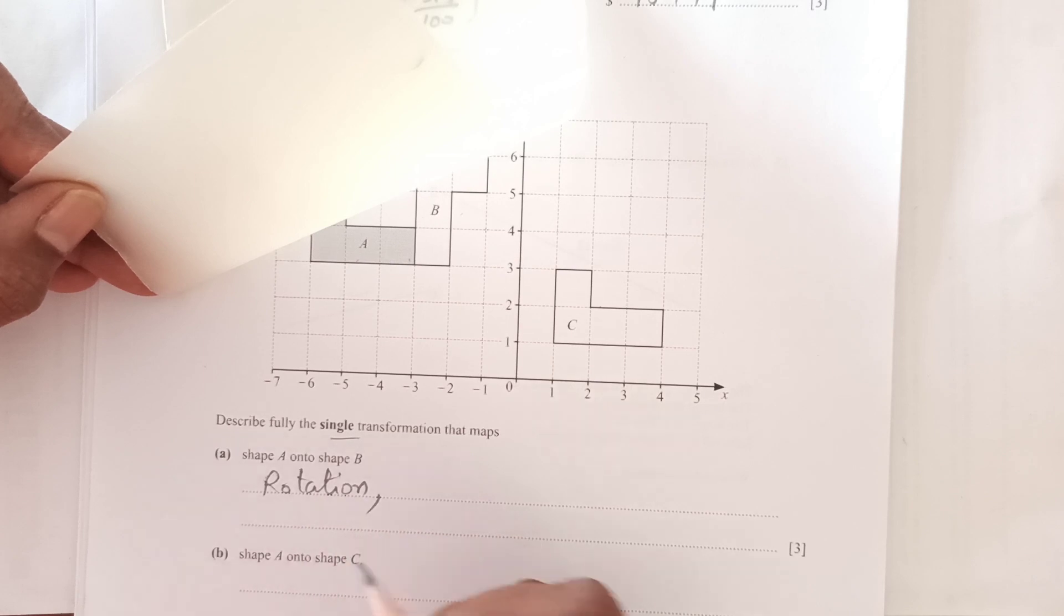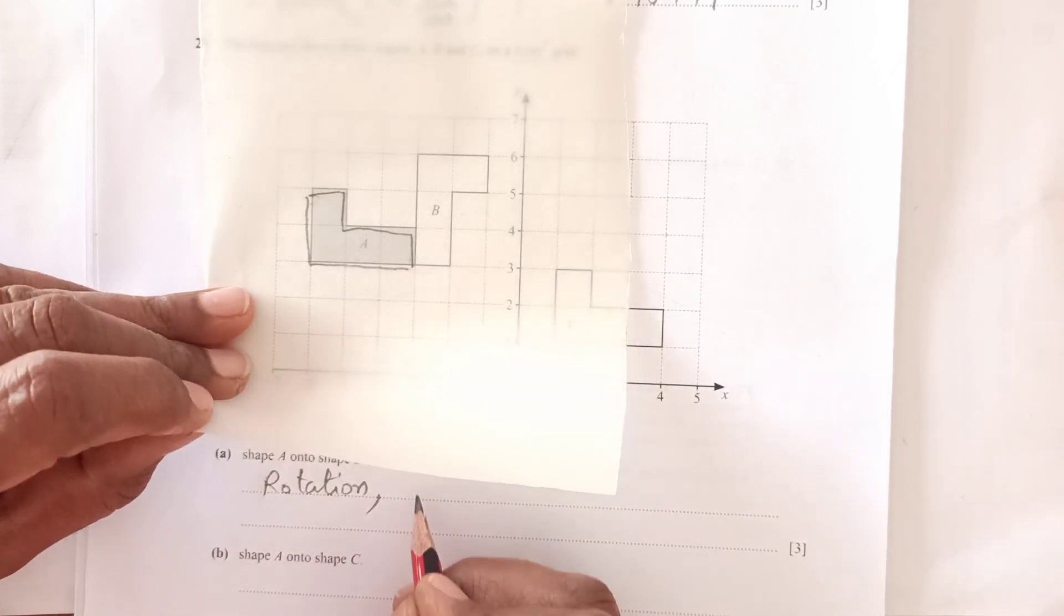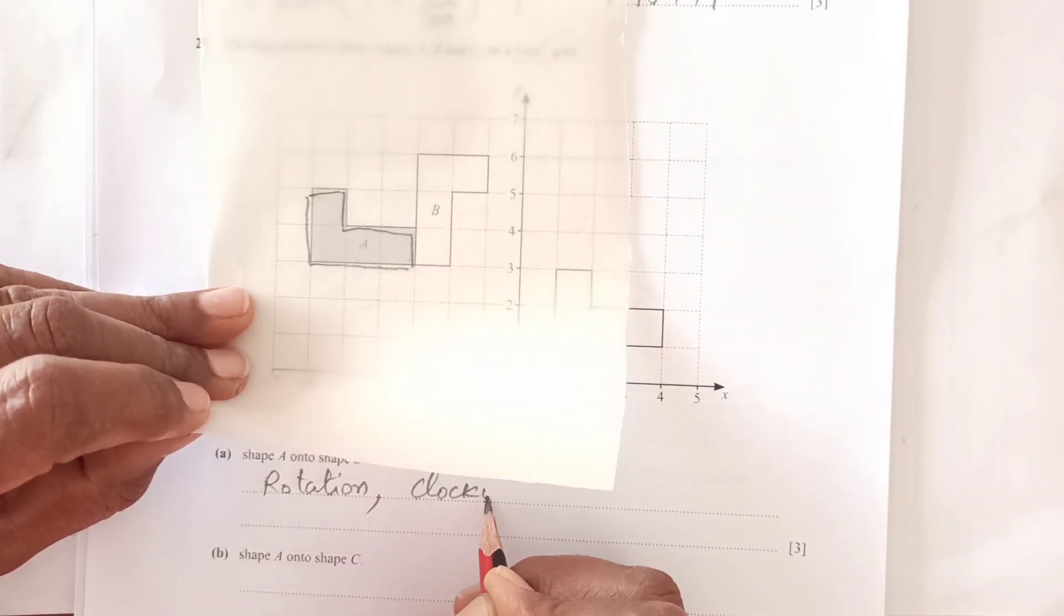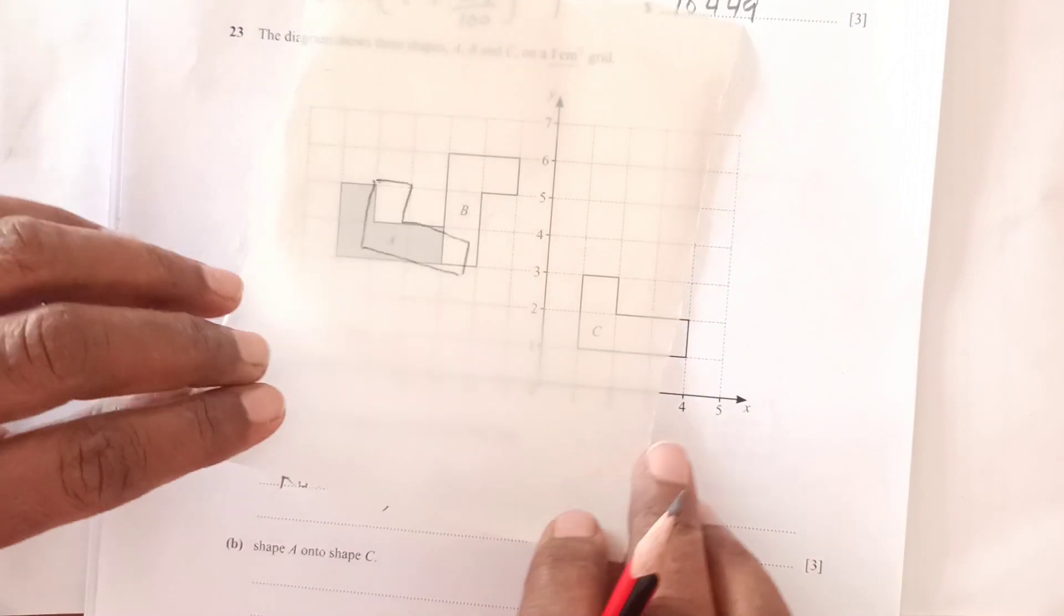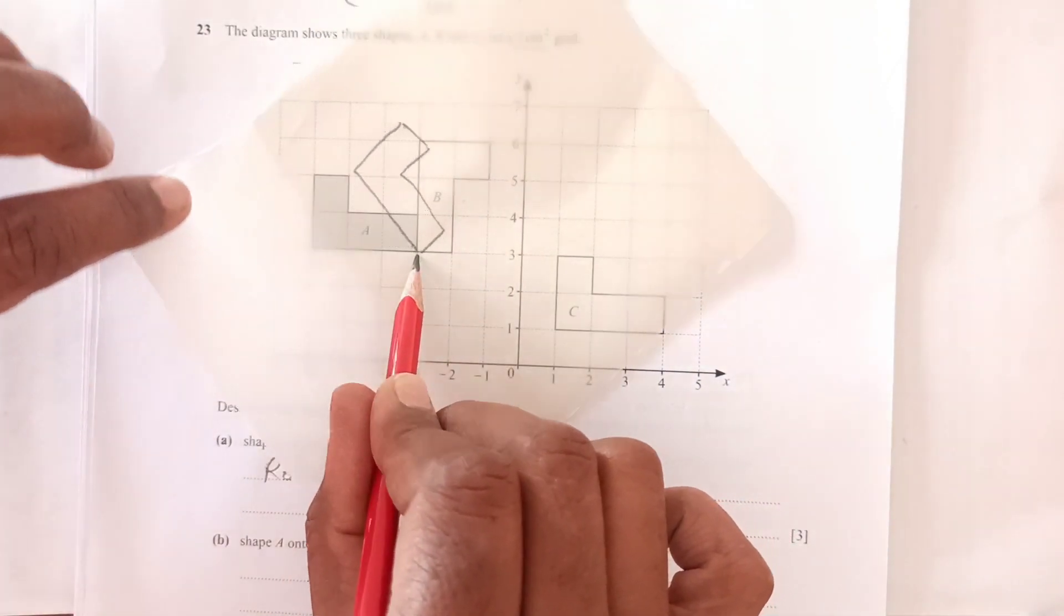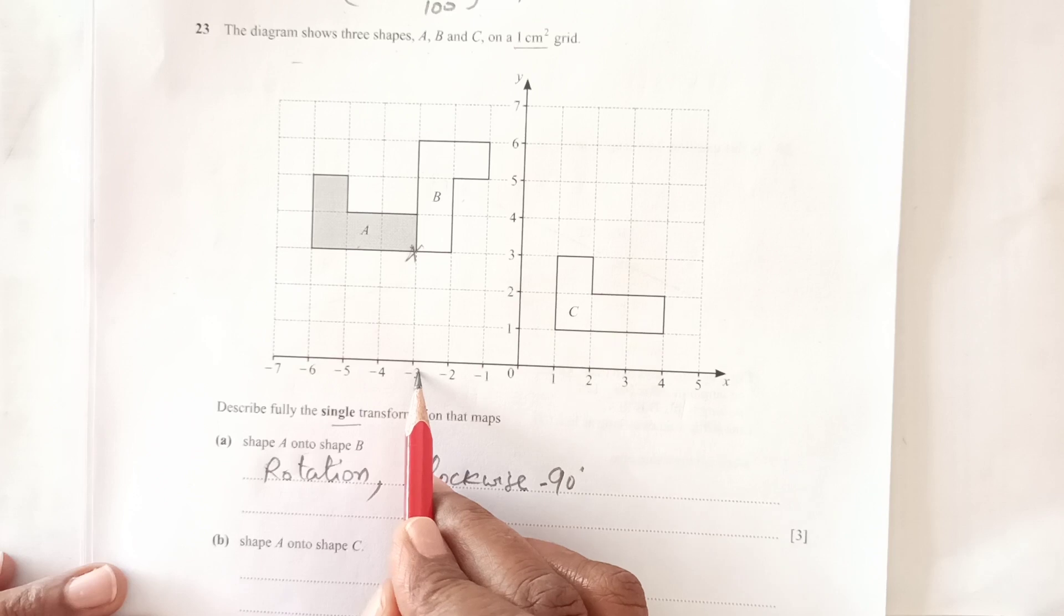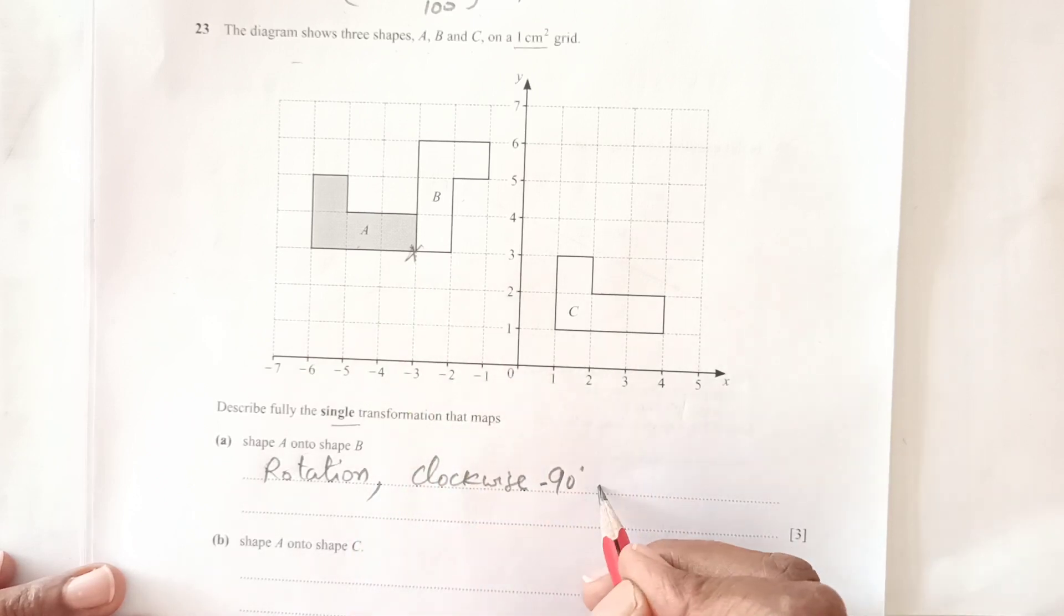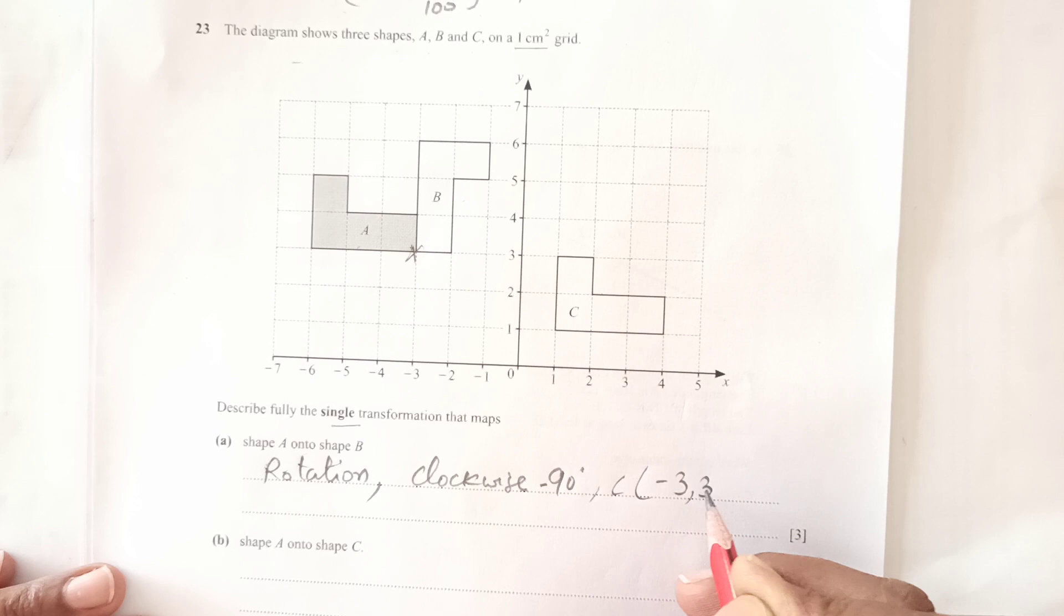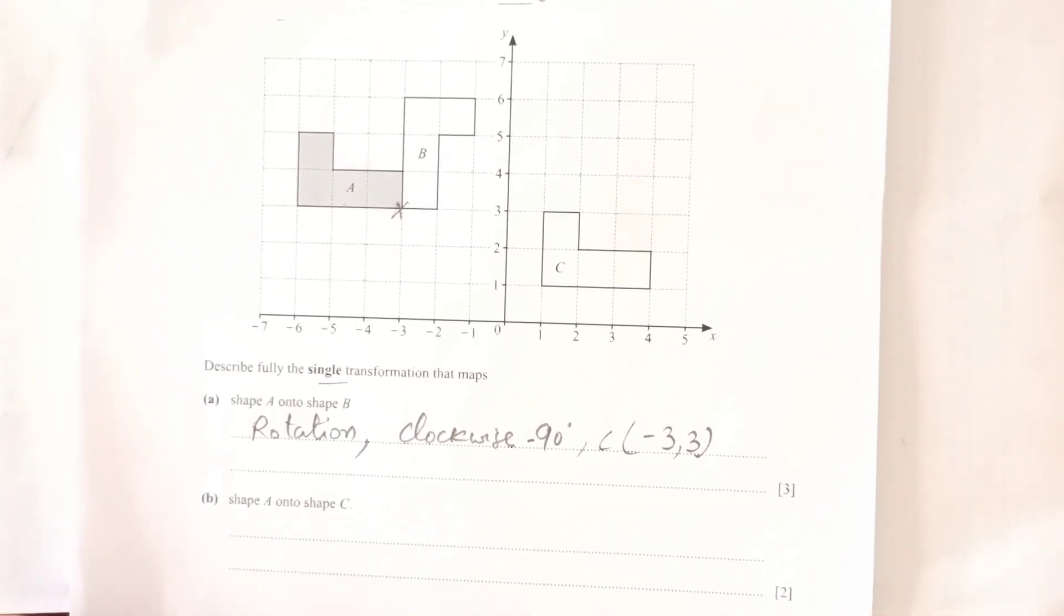This is a rotation. It's going clockwise 90 degrees, and we need the center. The center is at the point negative 3 and 3.